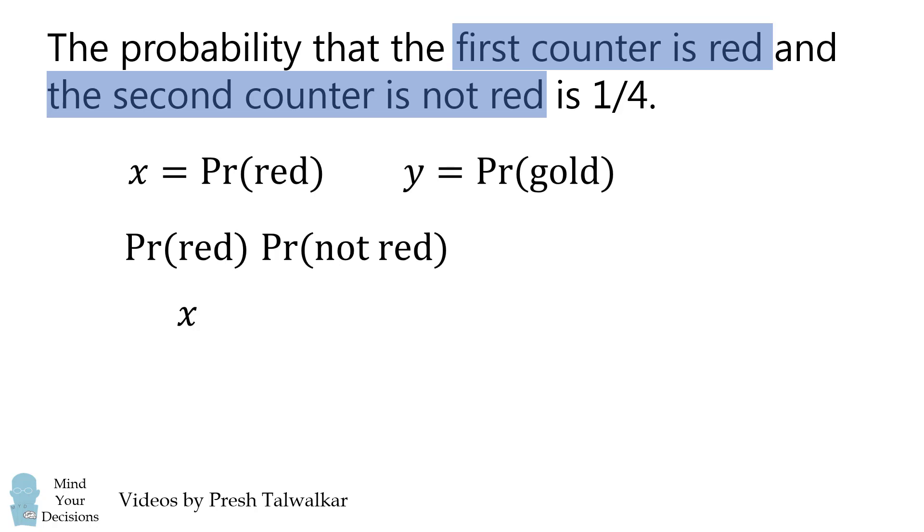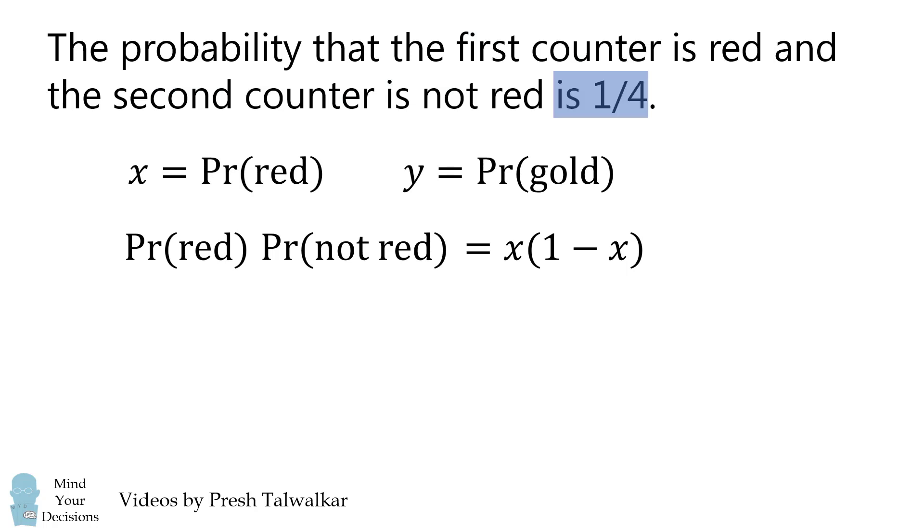Since the probability of drawing a red counter is x, the probability of drawing a not red counter will be 1 minus x. We multiply these two together, and we have x times the quantity 1 minus x.